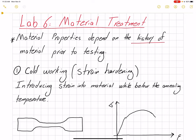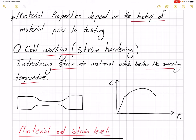The two treatments we are going to talk about in this lab are cold working or strain hardening — where we are introducing a strain into the material below the annealing temperature. If we introduce strains into the material at or above the annealing temperature, as we are adding residual stresses, those residual stresses are removed because of the high temperature, so the grain boundaries won't stay deformed and they would reshape.